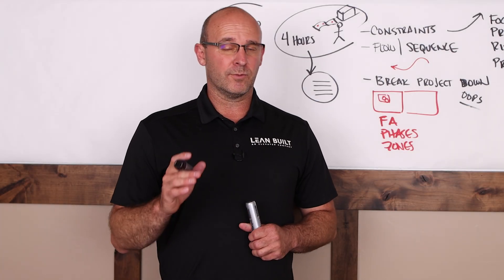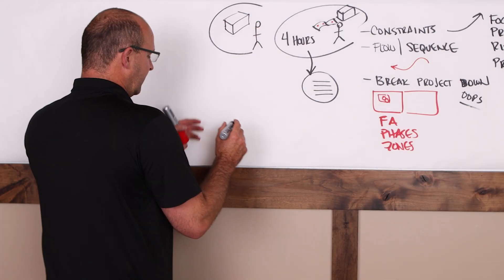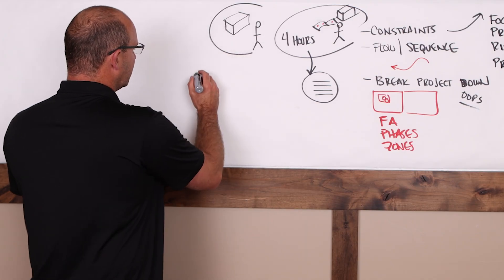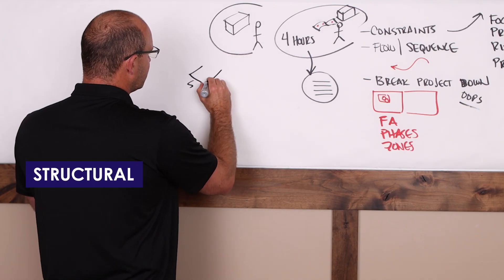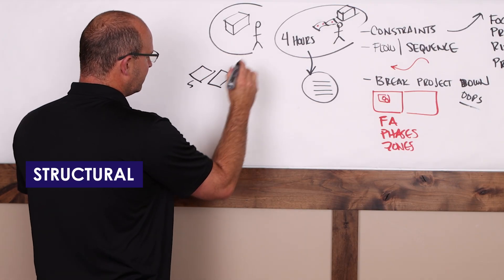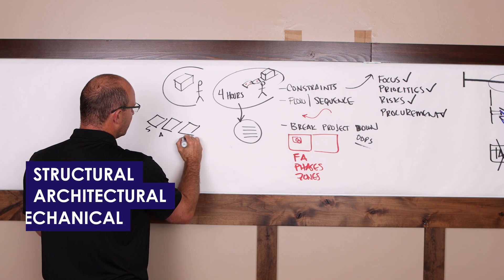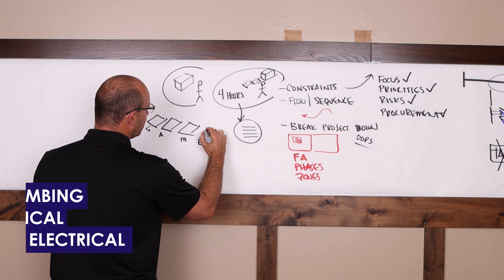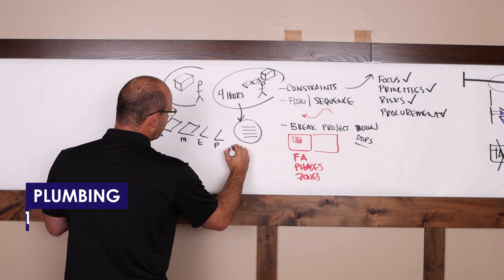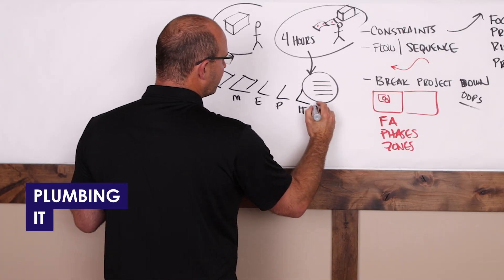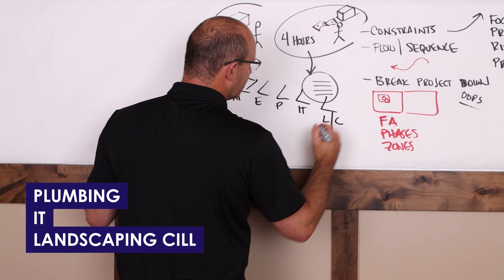Here's what I want to communicate. When we're reading drawings, you're going to have a couple of different sets that you're looking at. So you'll have your structural, this is supposed to be isometric. Architectural, you'll have mechanical, electrical, plumbing. And you'll have IT, you'll have all these different drawings, landscaping, civil.